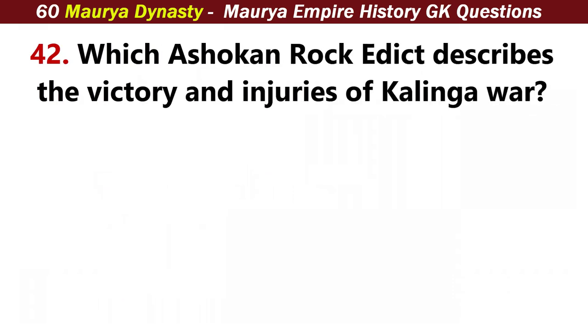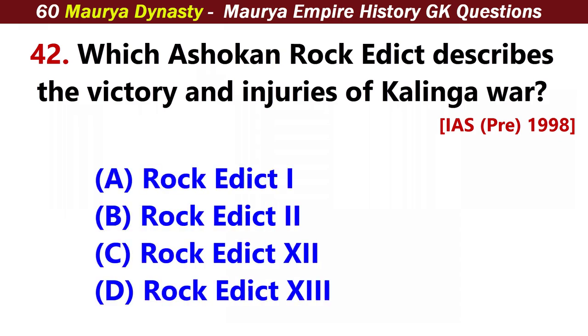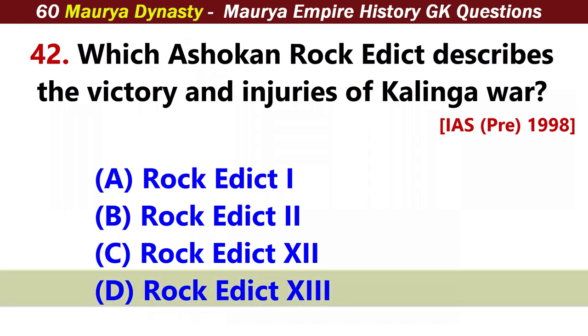Which Ashokan rock edict describes the victory and injuries of the Kalinga War? Answer D: Rock Edict 13.